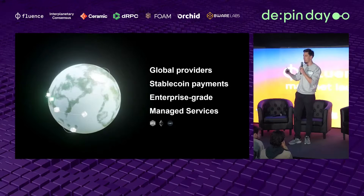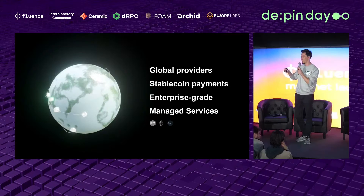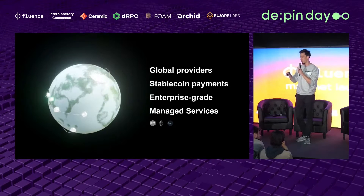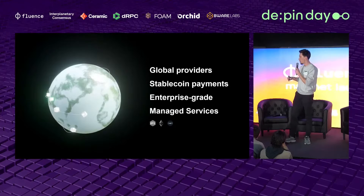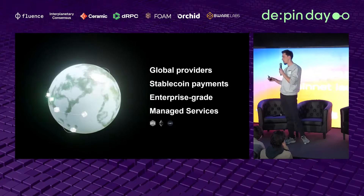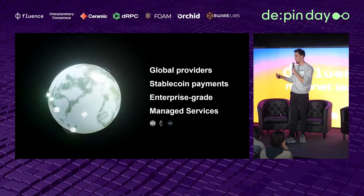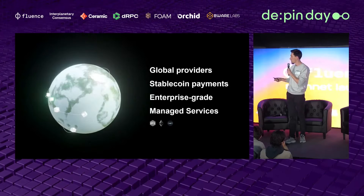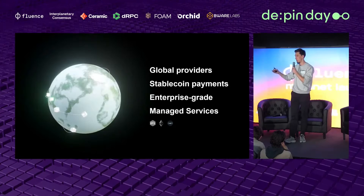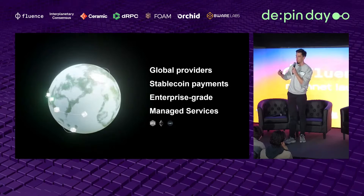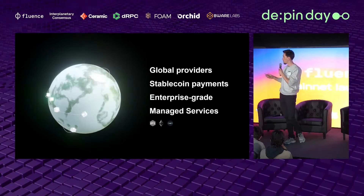For example, providers can run databases, provide access to the external world for computation — like making HTTP requests or accessing external APIs — or other services analogous to cloud services you'd find on Amazon. All of them run different services, so these services should be discoverable on the marketplace, and developers should be able to find them and select which providers they want to work with.